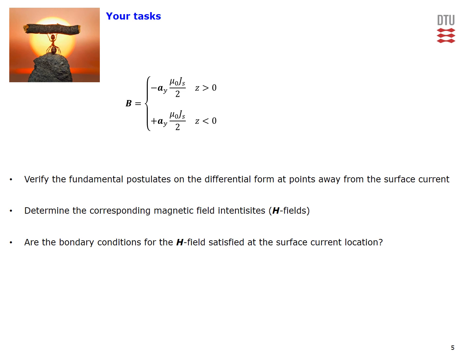Use this final expression to verify the fundamental postulates on the differential form at points away from the surface current. Also get the corresponding magnetic field intensities which are the H fields and use them to double check whether the boundary conditions for the H fields are satisfied at the surface current location. So thank you very much for your attention.